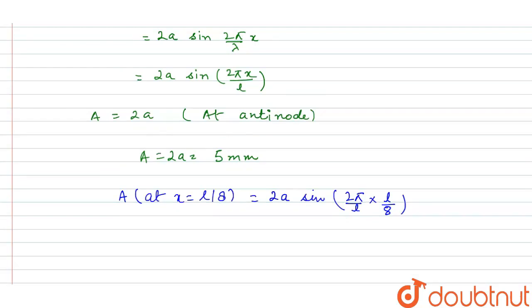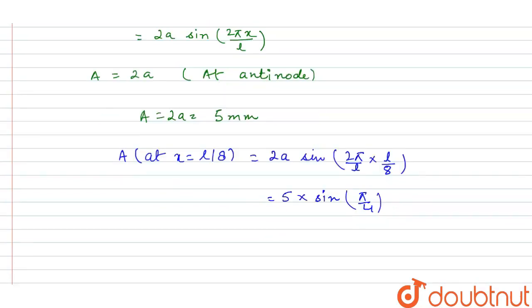The value of 2A is equal to 5, so it's 5 into sin pi by 4. Sin pi by 4 is equal to 1 upon root 2, so this will be equal to 5 into 1 upon root 2.